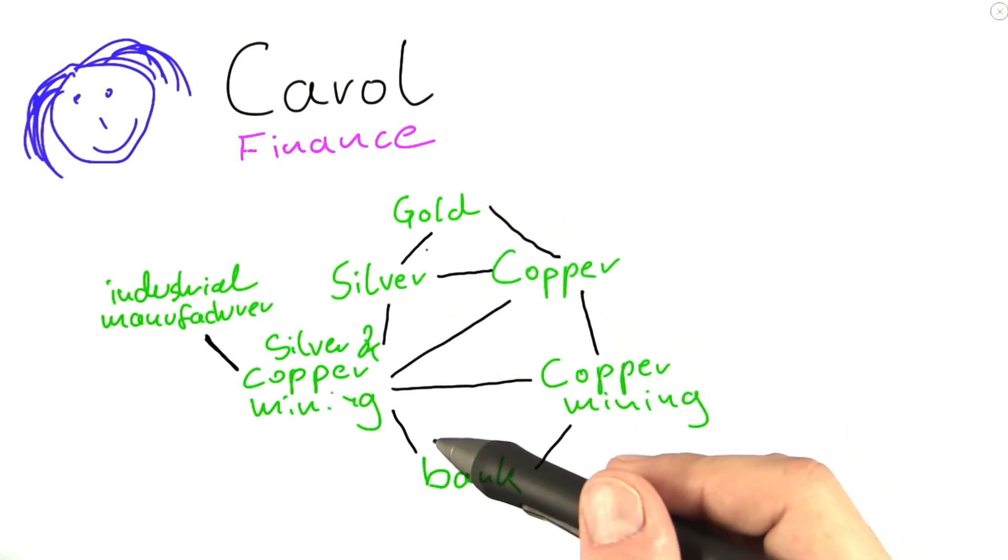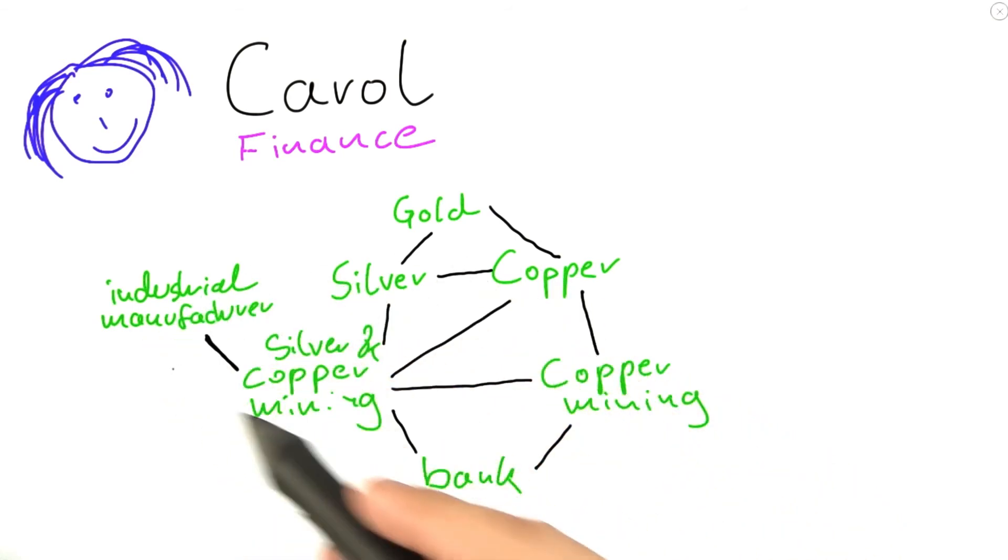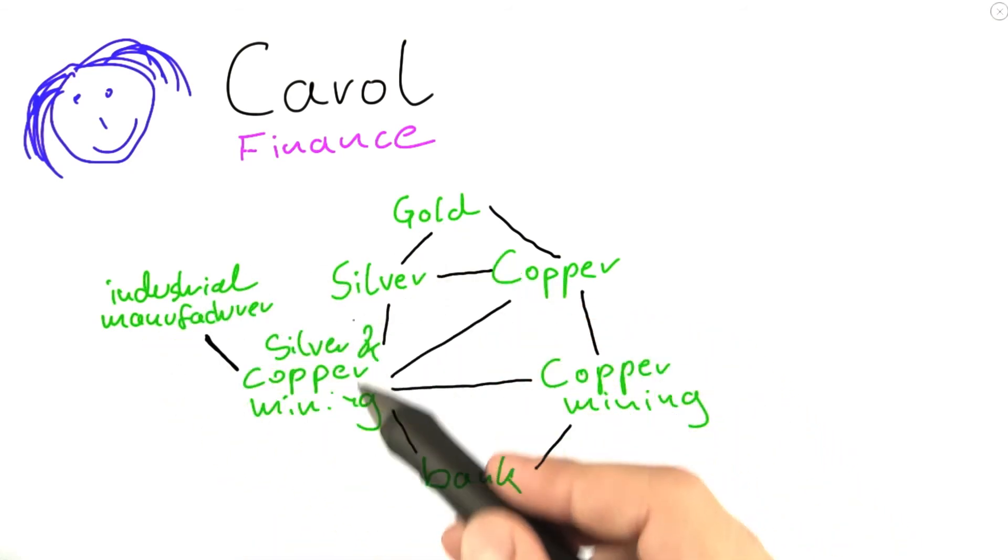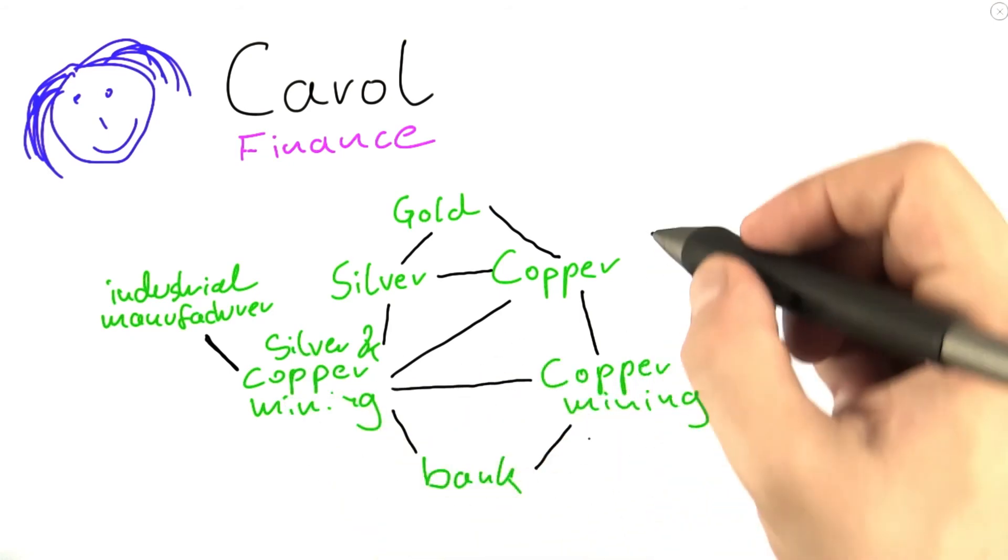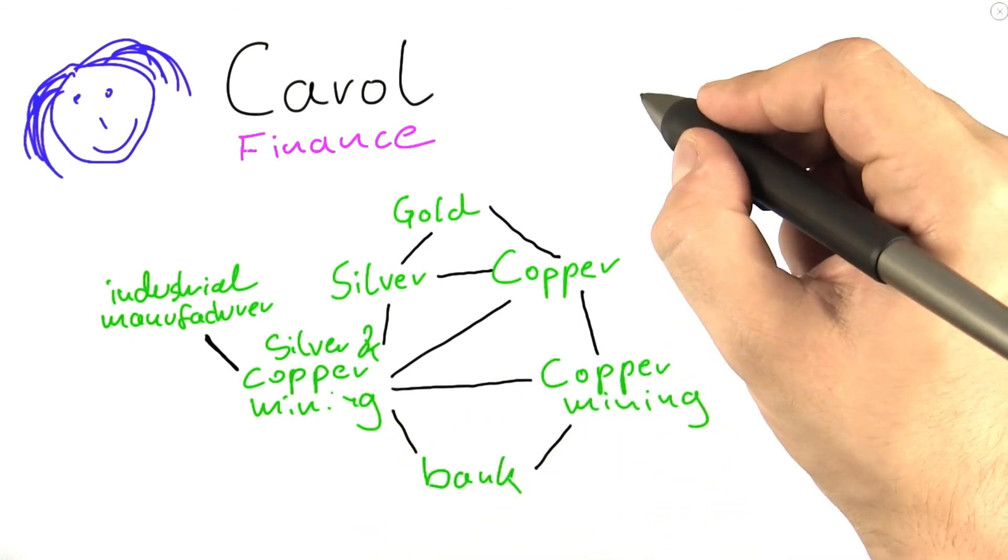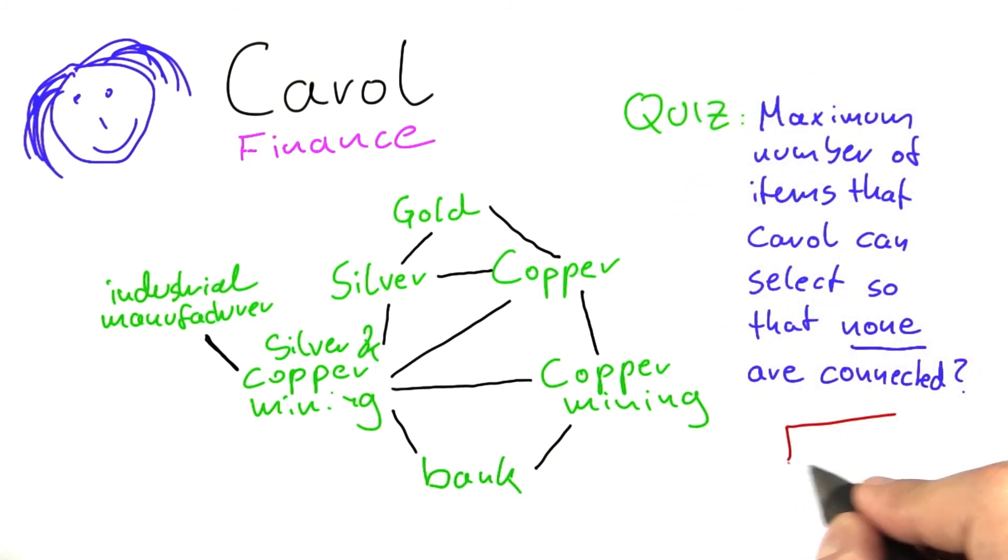So what is the largest portfolio, or how many items can Carol select at maximum so that none of them are connected? I would like you to figure that out as our next quiz. And I would like you to put your answer here in this box, please.